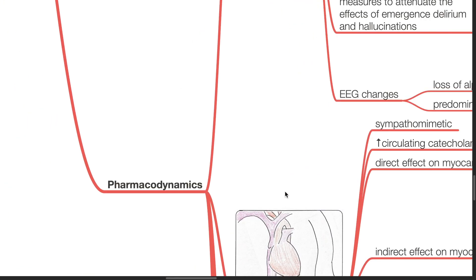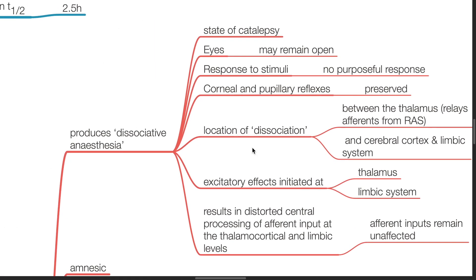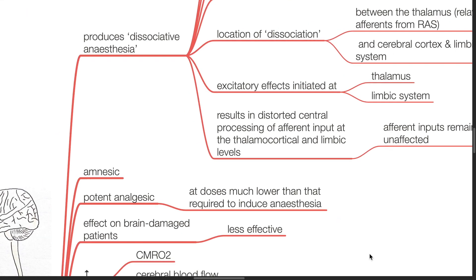Pharmacodynamics — effects on the central nervous system. Ketamine produces dissociative anesthesia, which is a state of catalepsy. The eyes may remain open but there is no purposeful response to stimuli. Corneal and pupillary reflexes are preserved. The dissociation occurs between the thalamus — which relays afferents from the RAS — and the cerebral cortex and limbic system. Excitatory effects are initiated at the thalamus and limbic system, resulting in distorted central processing of afferent input at the thalamocortical and limbic levels, while efferent outputs remain unaffected. Ketamine is also an amnesic.